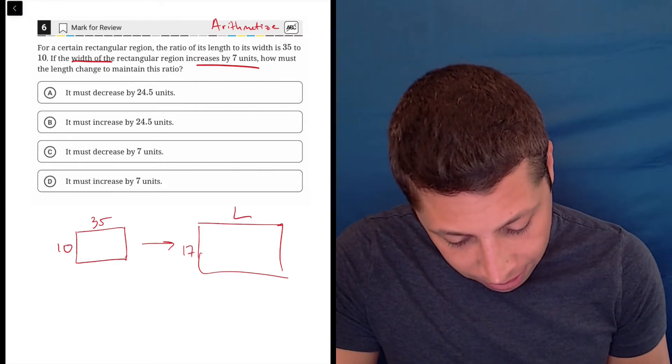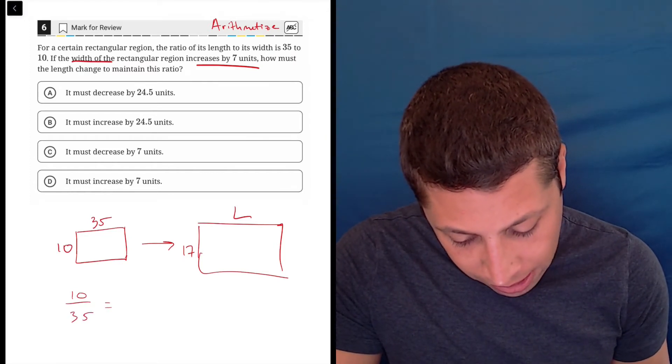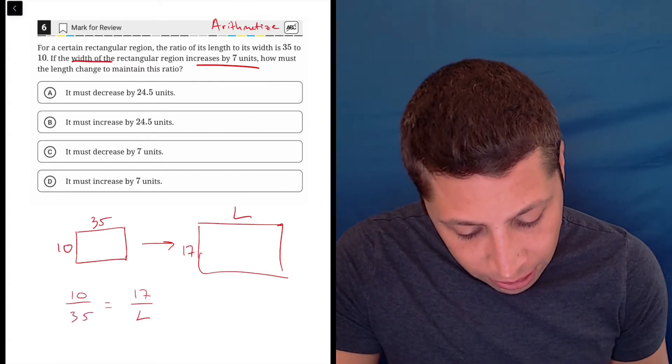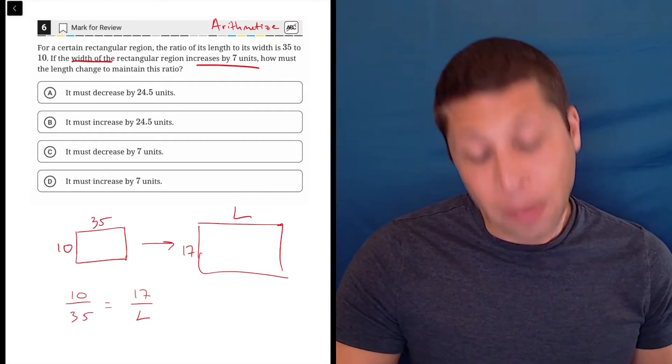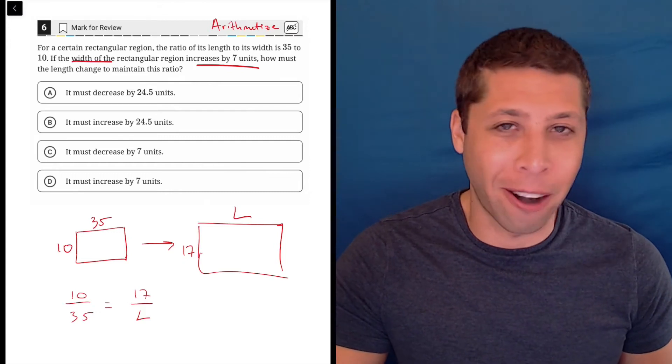I would have 10 over 35 is equal to 17 over L, right? Maybe I should have put it the other way just to maintain what they said in the question, but it doesn't matter. Ratios, you can flip them.